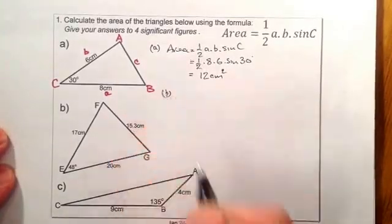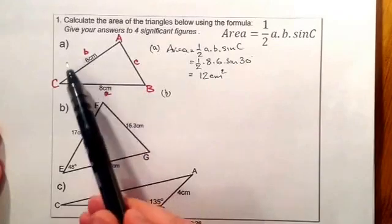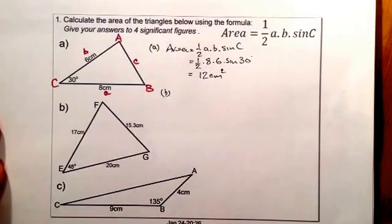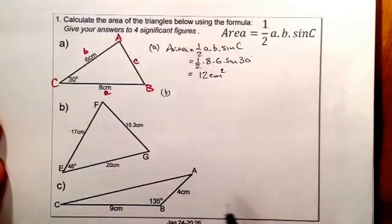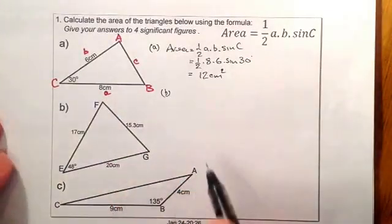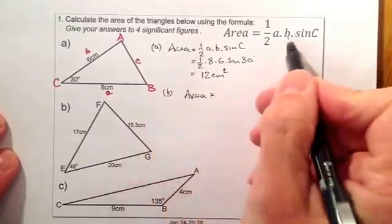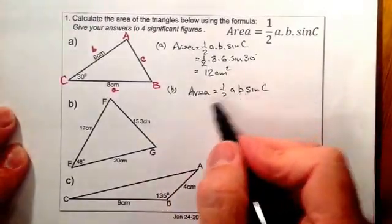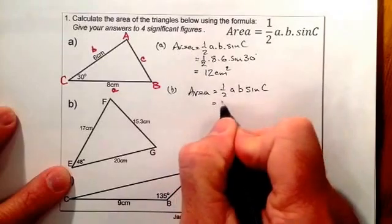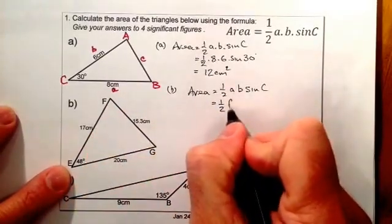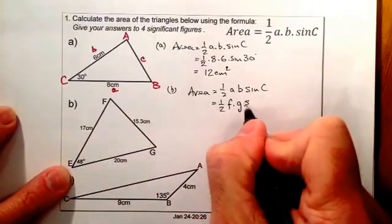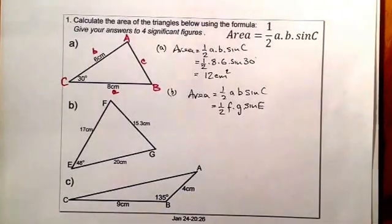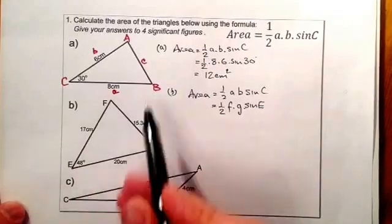For part B, there are two ways I could approach it. I could relabel the triangle the same way as part A, calling the angle C, and the sides A and B. Alternatively, I can rearrange the formula to use the letters I've been given. I'll try it that way. The area is half AB sine C, and I'll rearrange it to: area equals half times F times G times sine of E — just rearranging the formula to use the given letters.